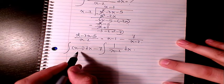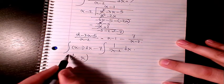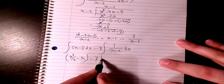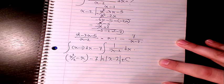Then the integration of x minus 1 is x squared divided by 2 minus x minus 7 log x minus 2 plus a constant number. So that will be the final answer to this question.